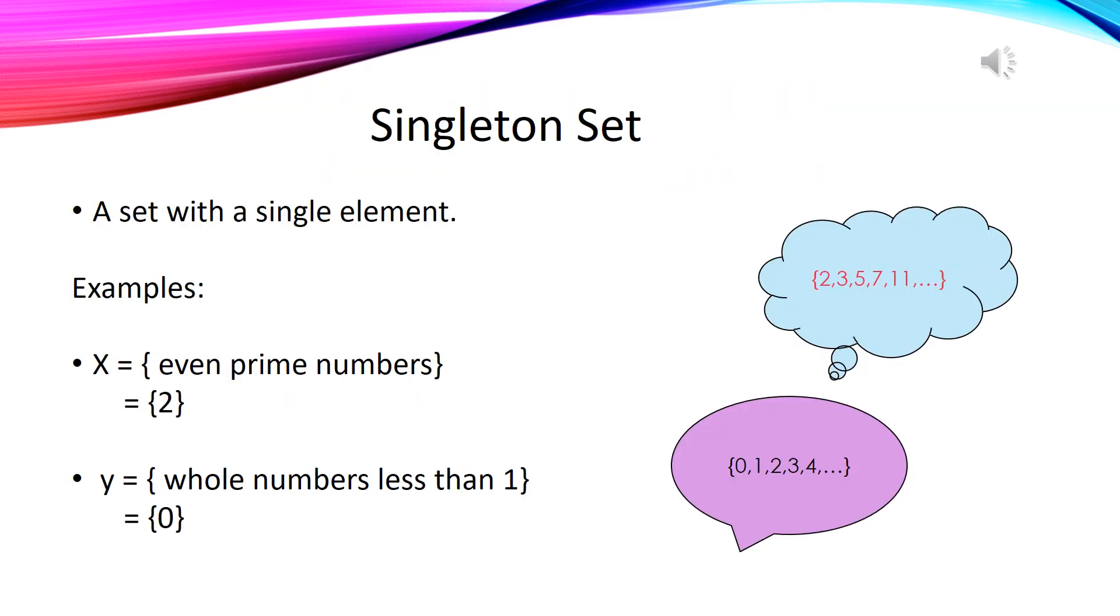A set having a single element is called a singleton set. For example, if we have set of even prime numbers. Can you tell me how many elements would be there? Yes, there will be only one element, that is two. As a set of prime numbers consists of 2, 3, 5, 7 and so on, and out of these two is the only even prime number.